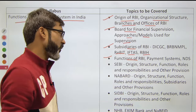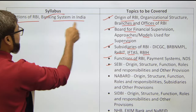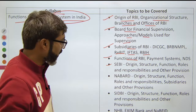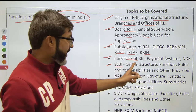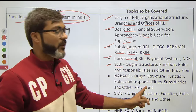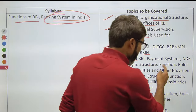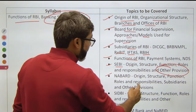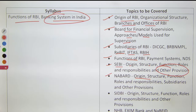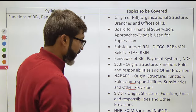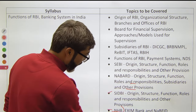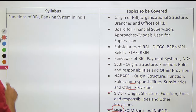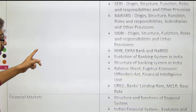For the banking system part, you have to cover each organization's origin, structure, functions, roles and responsibilities, subsidiaries, and other provisions — meaning current affairs related to that particular organization. You also have to cover NHB, Exim Bank, and NAFID, the newly constituted organization.